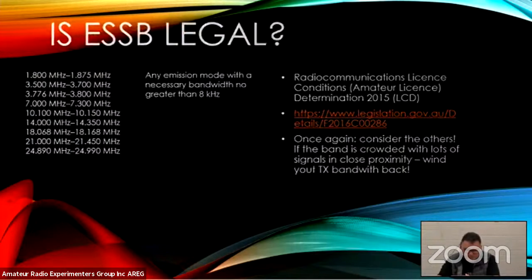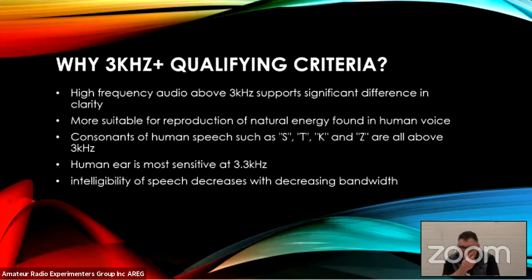Why three kilohertz plus as the qualifying criteria? High frequency audio above three kilohertz supports a significant difference in clarity. Frequencies above three kilohertz are most suitable for reproduction of the natural energy found in a human voice. Most of our consonants in human speech — such as S, T, K, and Z — are all above three kilohertz. The human ear is most sensitive at 3.3 kHz, and intelligibility of speech decreases with decreasing bandwidth.